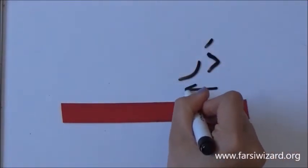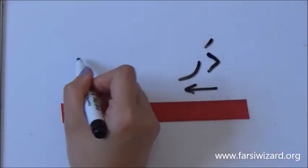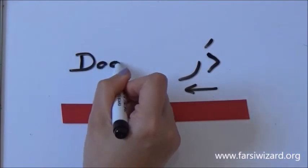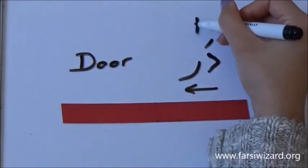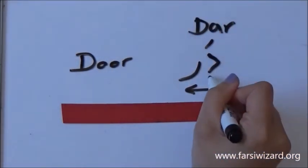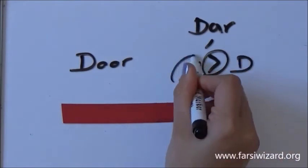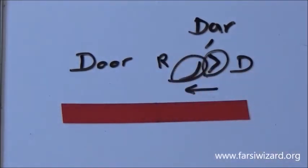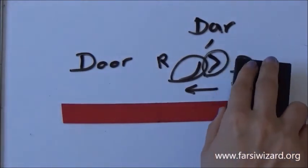Now look at this one. This one is easy. Only two letters, one vowel. This is the equivalent of the English word DOOR. In Farsi it is DAR. You got your D and you got your R there. DAR.